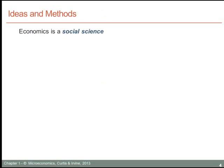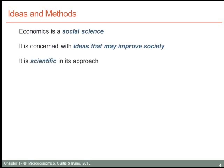Economics then is a social science. It is social in that it is concerned with ideas that may improve the way our society functions. It is also scientific, and we can describe three ways in which economics is scientific. First of all, economics uses mathematics. The mathematics used in this course is very elementary — no more than linear equations to describe the behaviors we're examining. We will frequently solve for two linear equations to get a solution, but no more mathematics than that.